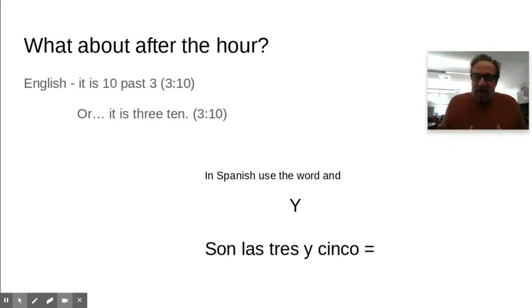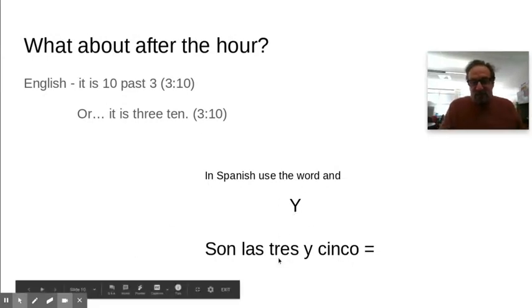What about after the hour? Suppose you want to say, not three, but ten past three or three ten. Well, in Spanish, you just use the word and. The word only has one letter. It's y. Son las tres y cinco. Three and five. Three, cinco, five minutes after three.